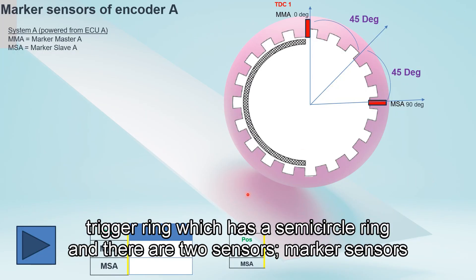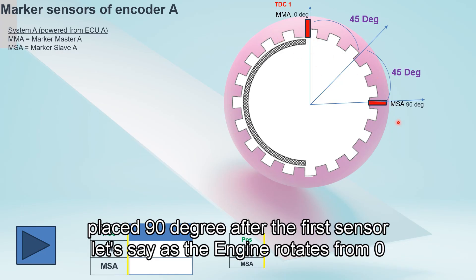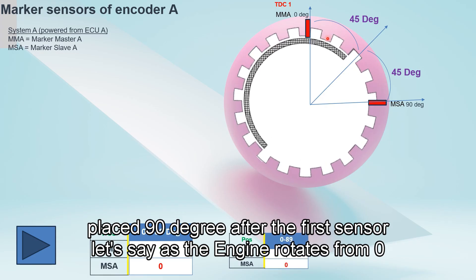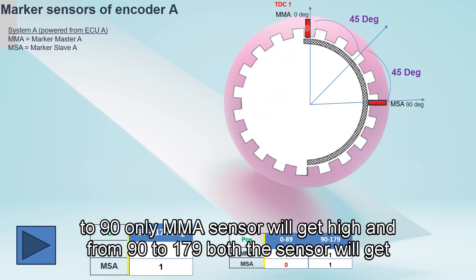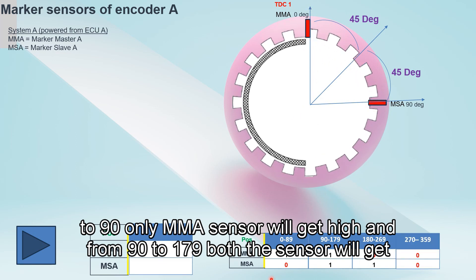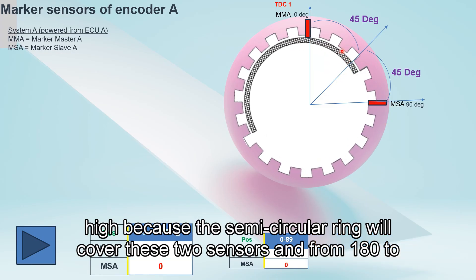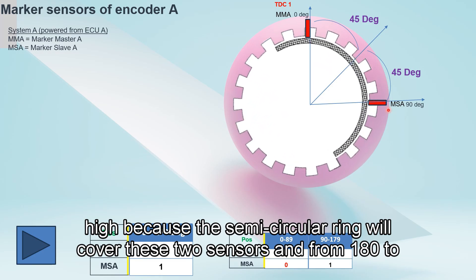Let's say we're using the same trigger ring which has a semicircle ring, and there are two marker sensors placed. One is at zero degrees, same as in previous discussion, and the other one is placed 90 degrees after the first sensor. As the engine rotates from 0 to 90 degrees, only MMA sensor will get high, and from 90 to 179 degrees, both sensors will get high because the semicircle ring will cover these two sensors.